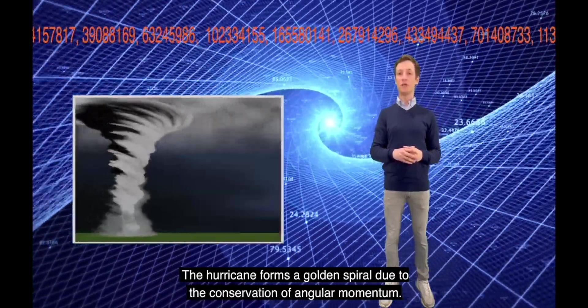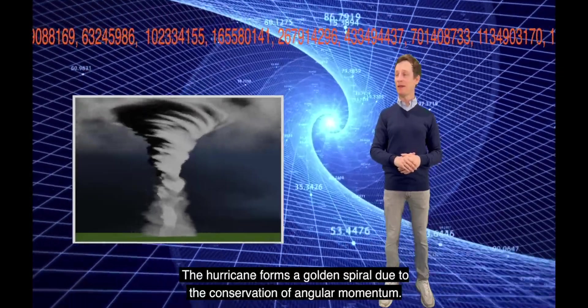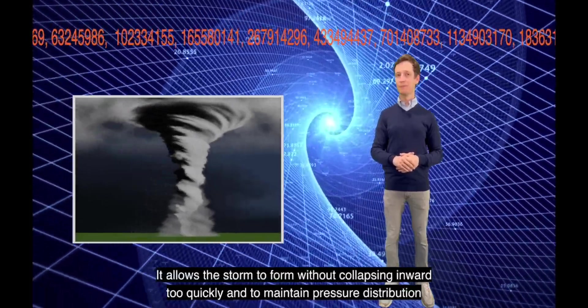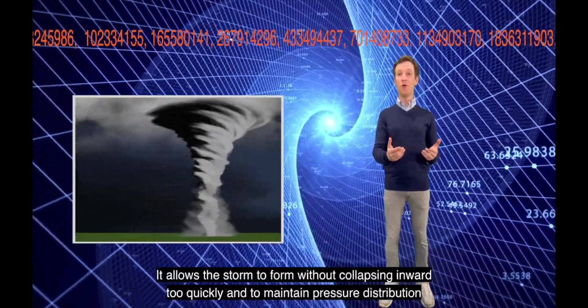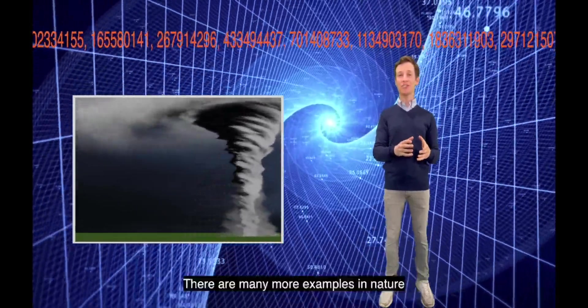The hurricane forms a golden spiral due to the conservation of angular momentum. It allows the storm to form without collapsing inward too quickly and to maintain pressure distribution.